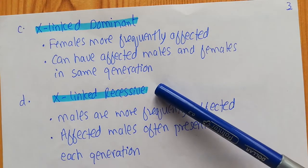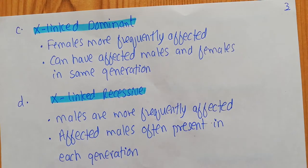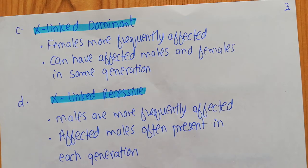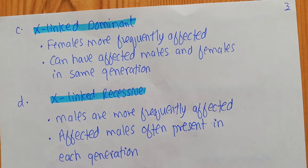X-linked recessive inheritance is more common in males than females. The reason is simple: in X-linked recessive inheritance, two copies of the mutant allele are needed. Since males receive only one X chromosome from their mother and have no X chromosome from their father, they are already deficient for one allele. So if they receive even a single mutant copy from their mother, they will express the disease. Affected males are often present in each generation.